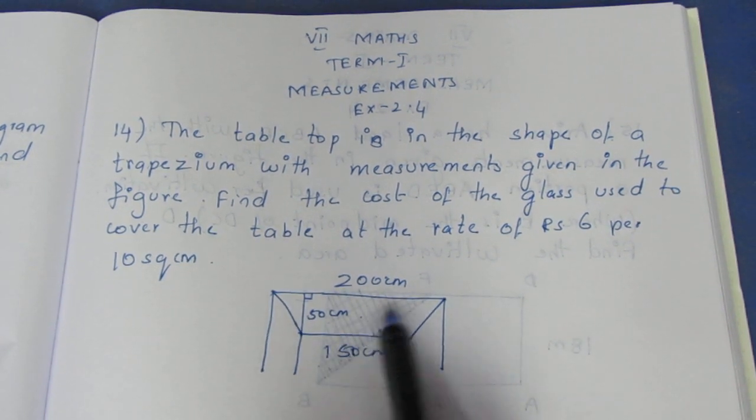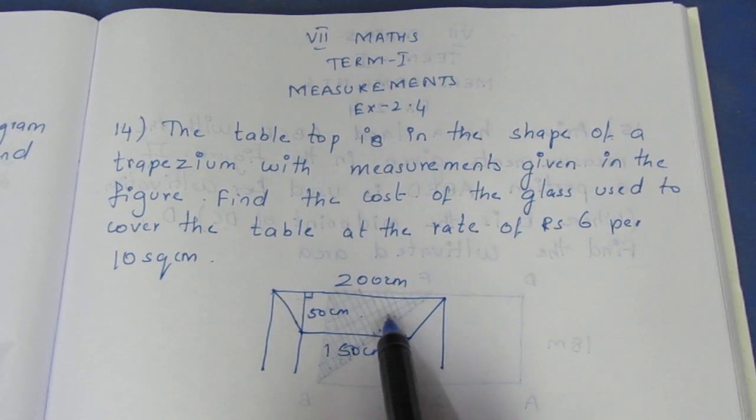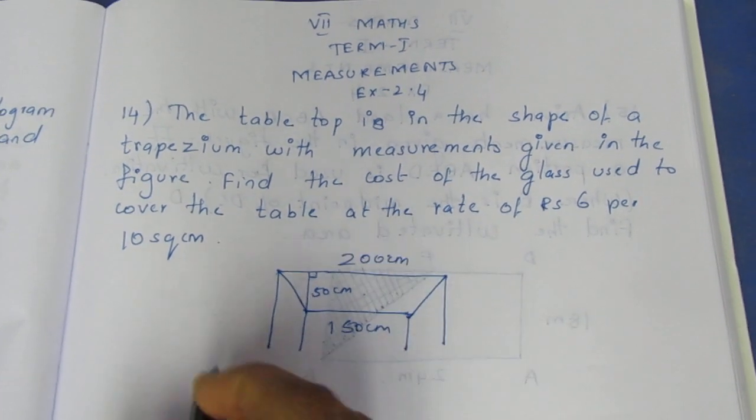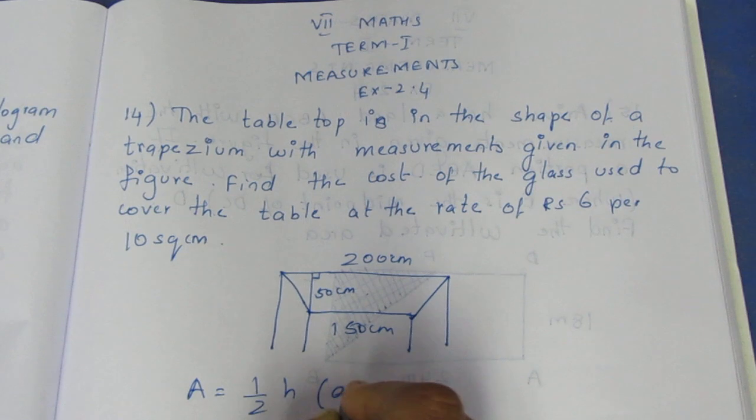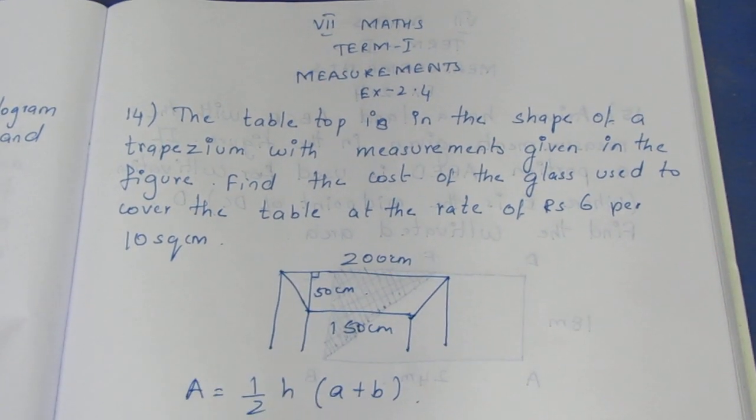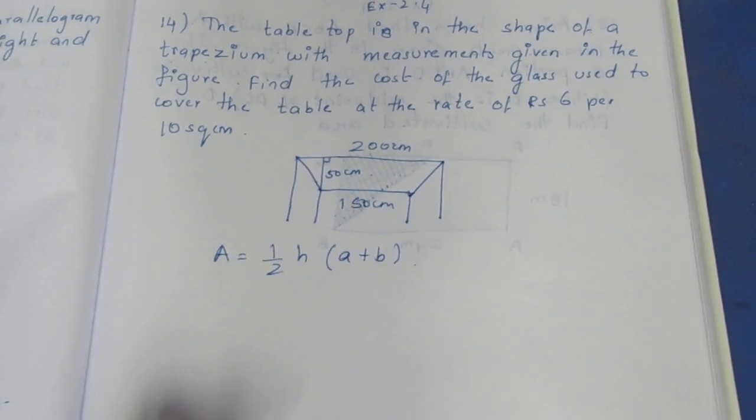The glass covers the full area, so we need to find the area of the trapezium. The area formula for trapezium is half h into a plus b, where h is the height and a plus b are the parallel sides.